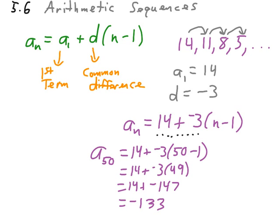So, our 50th term of the sequence would be a negative 133, and we can get that without having to generate the first 49 terms before it.